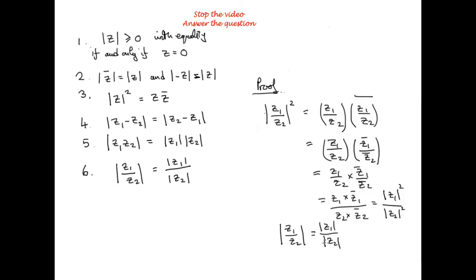This only holds because all quantities are positive. We must add the caveat that z2 does not equal zero — we are not allowed to divide by zero — and by property 1, the modulus of z2 is zero only when z2 itself is zero, so that covers the undefined case.